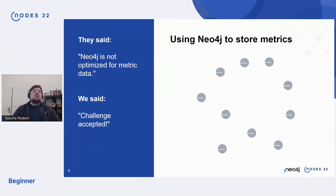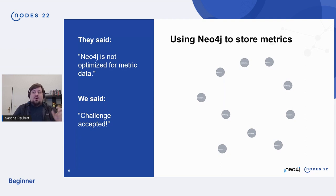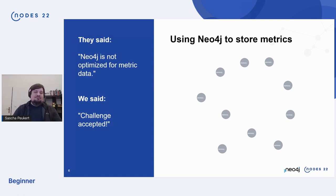And in the beginning, they said to us: Neo4j isn't optimized to store metric data — it's not really a graph, right? And they're right. But we said, well, let's see how far we can take that. Challenge accepted. So as you can see here, we have nodes and they're not really related at all. Every node is like one point — a specific value at a specific time. It's not related, not really graphy. Let's look at the first data model that we came up with.